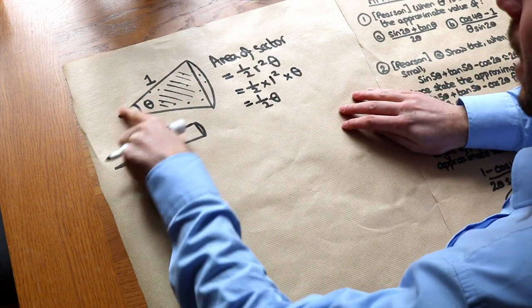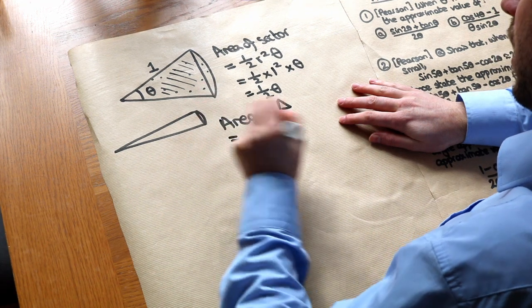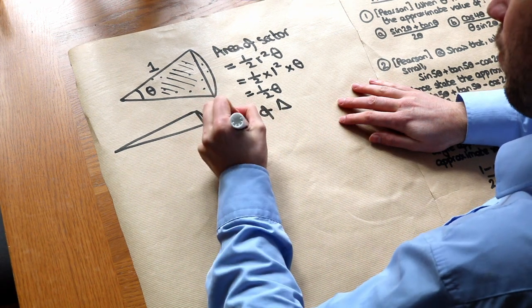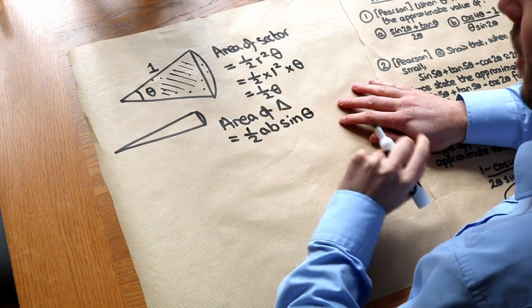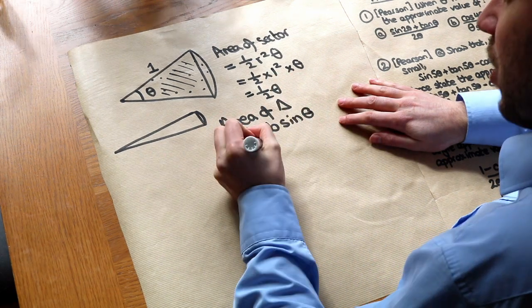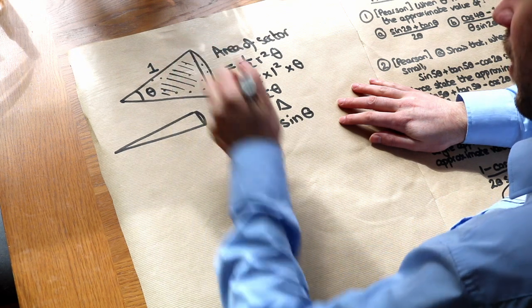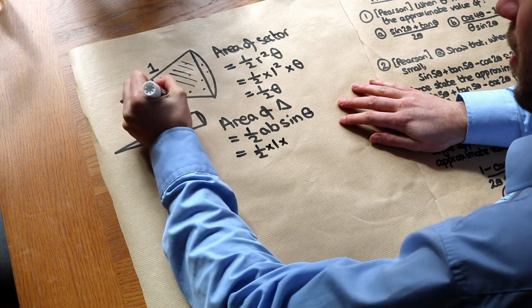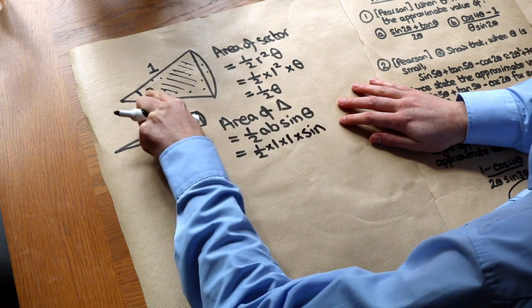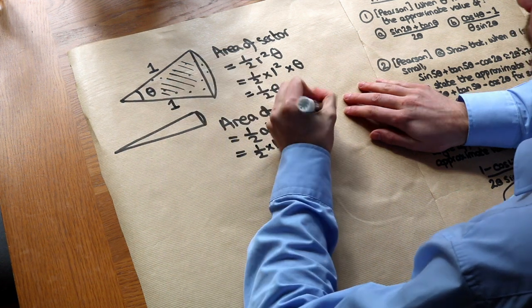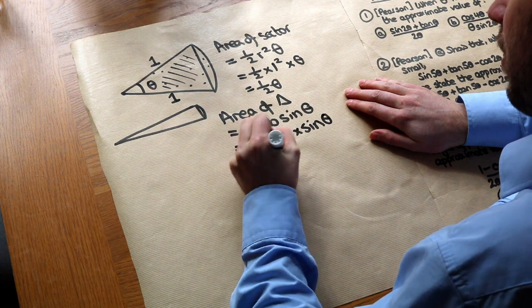Now what about the area of this triangle? The area of the triangle uses the sine formula — and this formula is still applicable when theta is in radians, it doesn't change. So we do ½ times one side times the other side (also one), times the sine of the included angle between them. So that simplifies to ½sinθ.